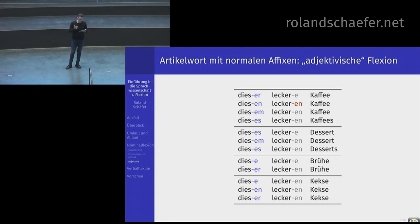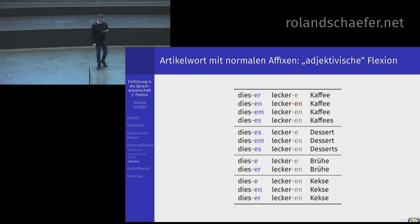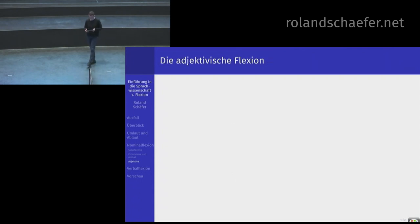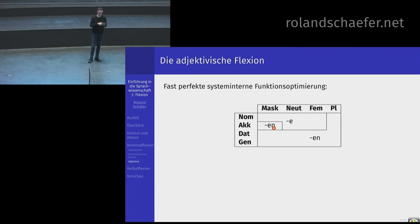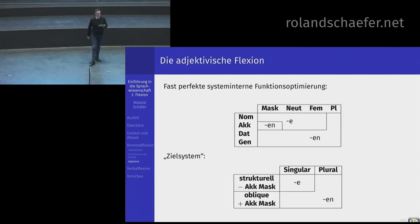Das ist aber auch nicht beliebig verteilt. Es gibt eine Ausnahme – der Akkusativ-Maskulinum-Singular, der eigentlich nicht N gehen sollte. Die sogenannten strukturellen Kasus, Nominativ und Akkusativ, flektieren mit E bei diesen sogenannten schwachen Adjektiven. Dativ und Genitiv, also die Obliquen-Kasus, und der Plural flektieren mit N. Das System möchte eigentlich so aussehen: Nominativ-Akkusativ dem Genitiv-Dativ gegenübergestellt und Singular dem Plural.